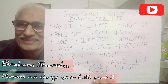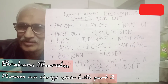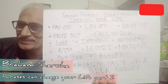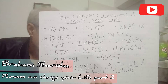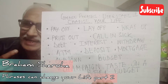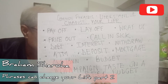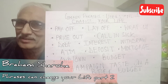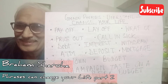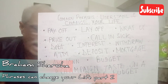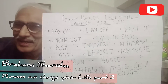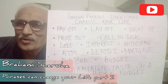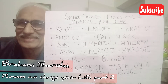Let's look at some typical vocabulary words in the world of finance. The first word is 'debt' — the 'b' is not pronounced, so it's simply 'debt.' You can be in debt, out of debt, or indebted to somebody. 'I'm in debt' means you have taken a loan and are supposed to pay it back. When you pay it off, you are out of debt. If someone has helped you, you say 'I am indebted to you.'